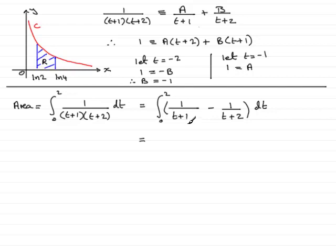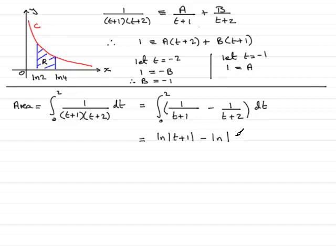What is the integral of 1/(t+1)? This is a natural log type, because differentiating the denominator gives 1, which sits on the top. So it becomes the natural log of |t+1|. Similarly, integrating 1/(t+2) is also a natural log type, giving minus the natural log of |t+2|. We put this in square brackets with limits from 0 to 2.